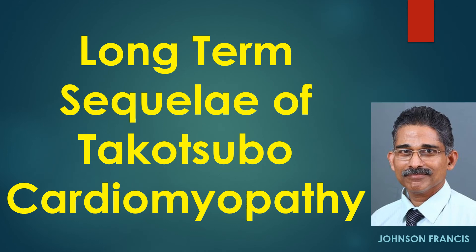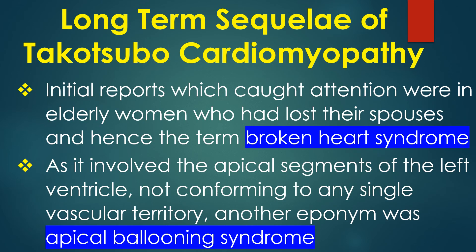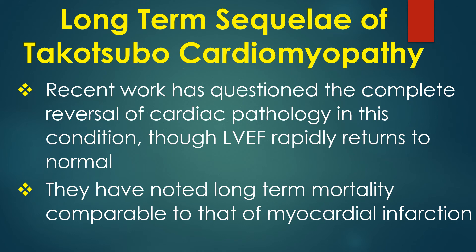Generally, Takotsubo Cardiomyopathy, also known as stress cardiomyopathy or broken heart syndrome, is considered a cause of reversible left ventricular dysfunction in response to major life stress. Initial reports catching attention were in elderly women who had lost their spouses, hence the term broken heart syndrome. As it involved apical segments of the left ventricle not conforming to any single vascular territory, another eponym is apical ballooning syndrome. However, recent work has questioned complete reversal of cardiac pathology, noting long-term mortality comparable to that of myocardial infarction, though left ventricular ejection fraction rapidly returns to normal.